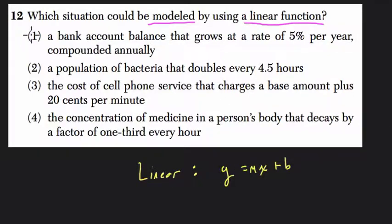I'm going to eliminate choice 1 and 2 and 4 right away, because none of these situations are linear. What I mean is, the bank account that goes by 5% per year, compounded annually, well, if you have $100 in the bank, after the first year, if you add 5% to it, that's the same as multiplying by 1.05. You have $105.